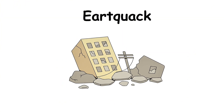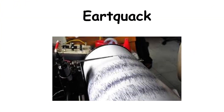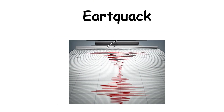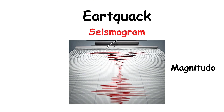To measure earthquakes, scientists use an instrument called a seismograph. This device records ground vibrations, which are then displayed as a graph called a seismogram. From this data, the earthquake's strength is calculated using the magnitude scale.